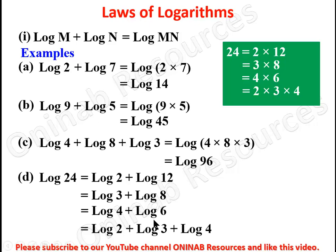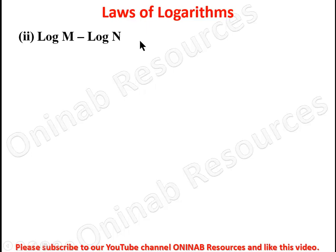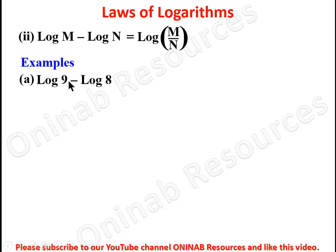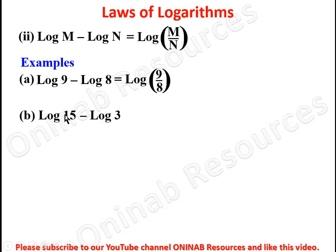We go to the second law: log m minus log n is equal to log m over n. In this law, subtraction of two logarithms of numbers means you divide the numbers under the same logarithm. For example, log 9 minus log 8 gives log 9 over 8. For the second example, log 15 minus log 3 gives log 15 divided by 3, and 15 divided by 3 gives 5, so the answer is log 5.